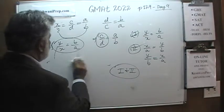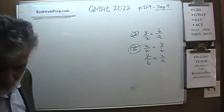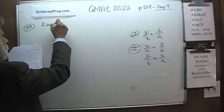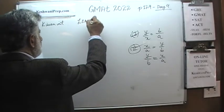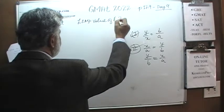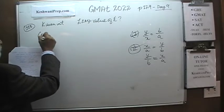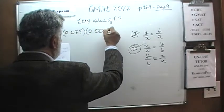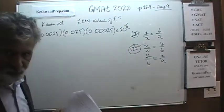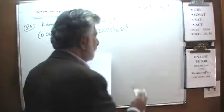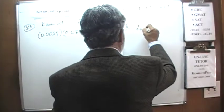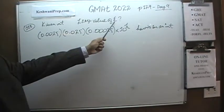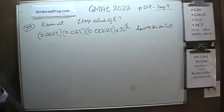In problem 113, K is an integer. We are looking for the least possible value of K, given that 0.0025 times 0.025 times 0.025 times 10 to the power K must be an integer. We are told this quantity is an integer — what is the least possible value of K?